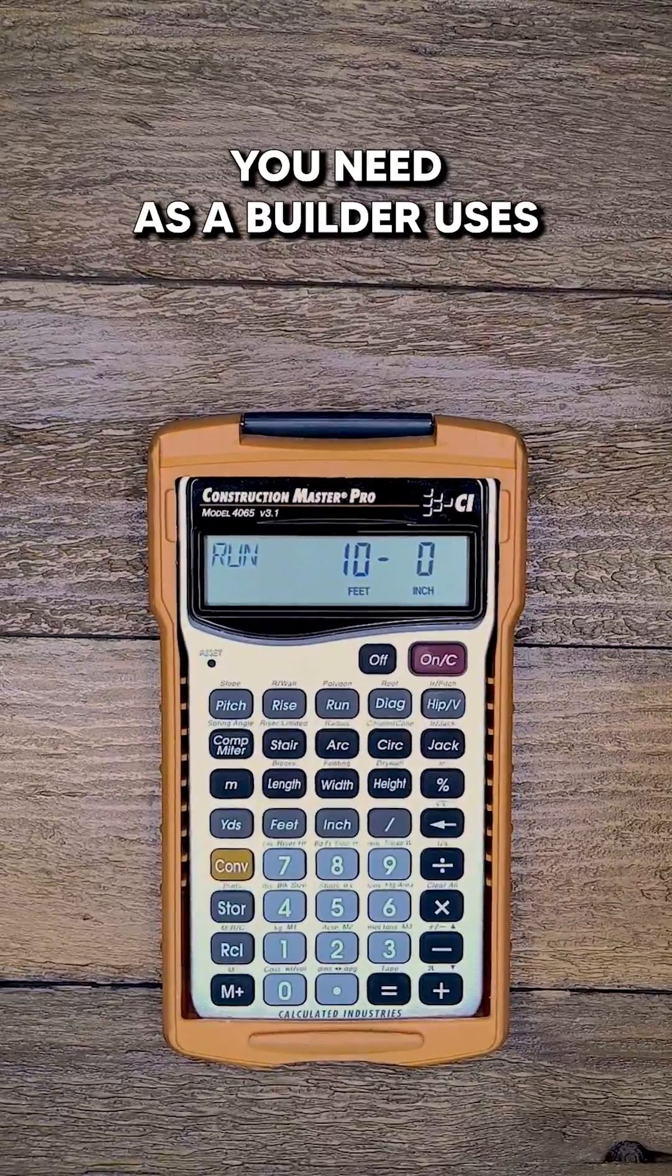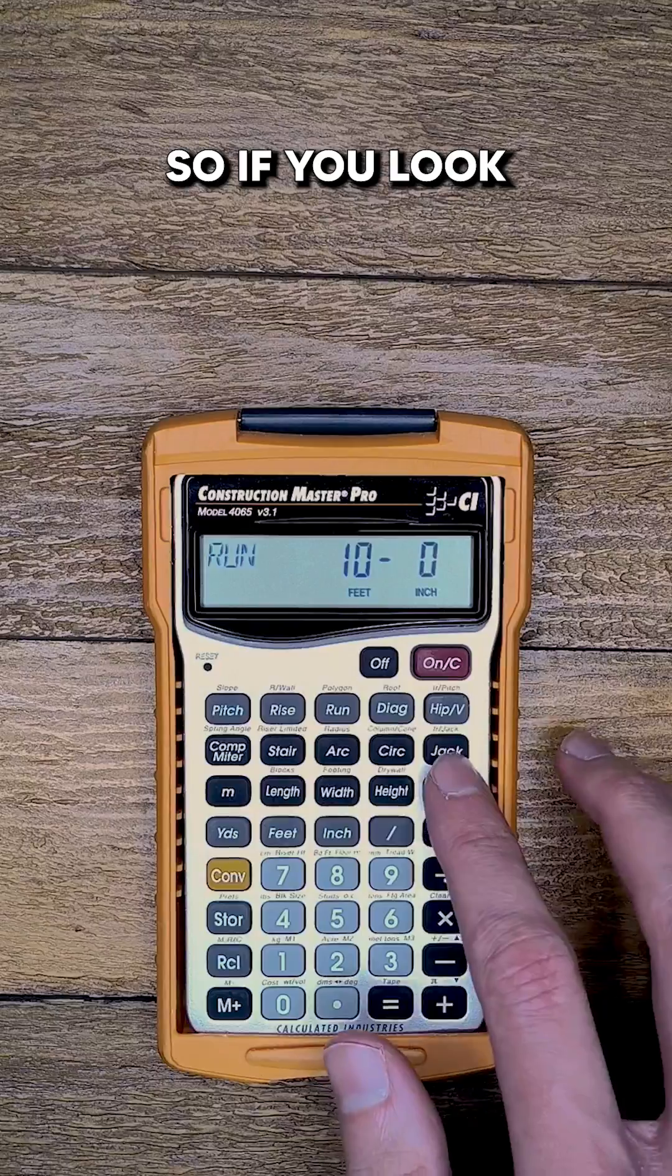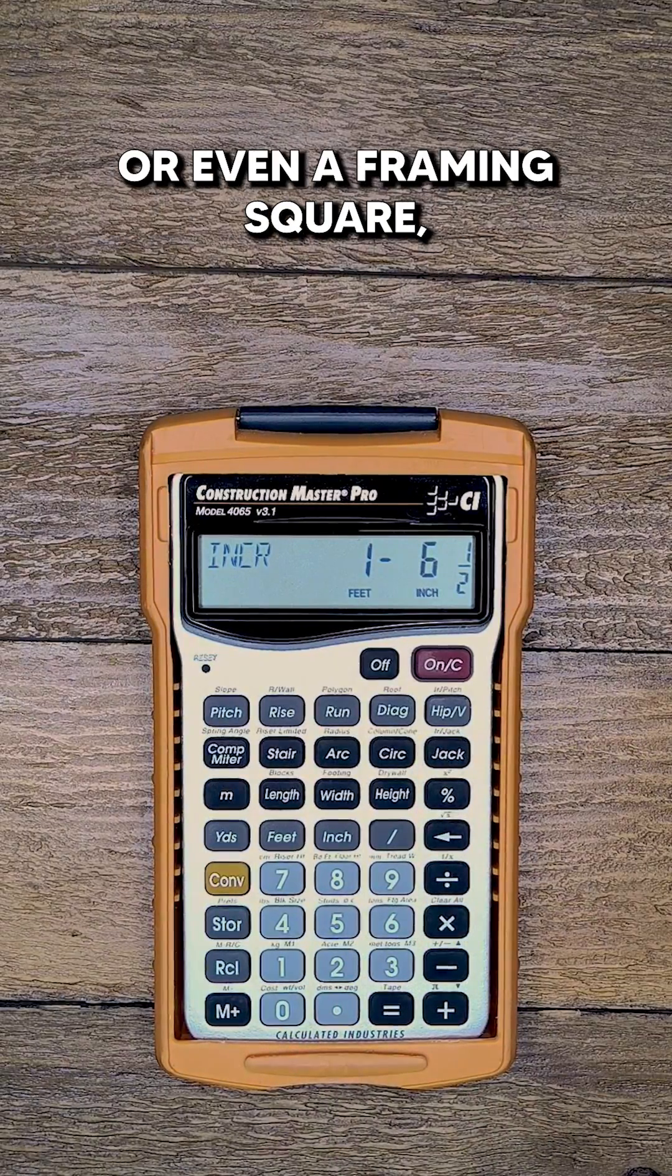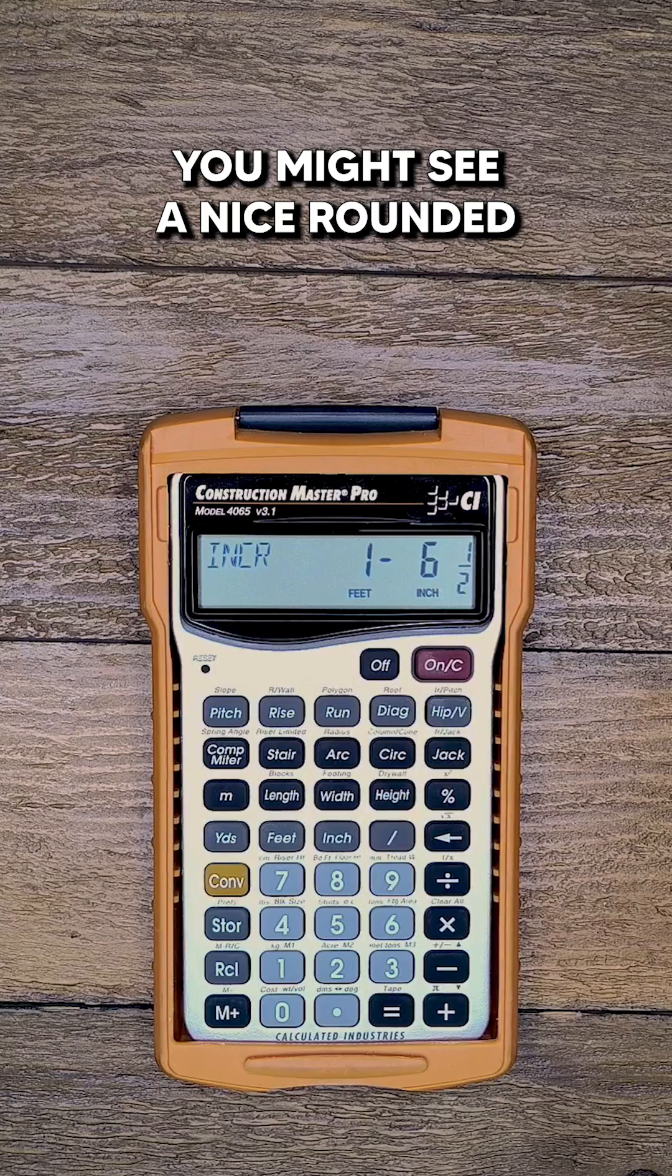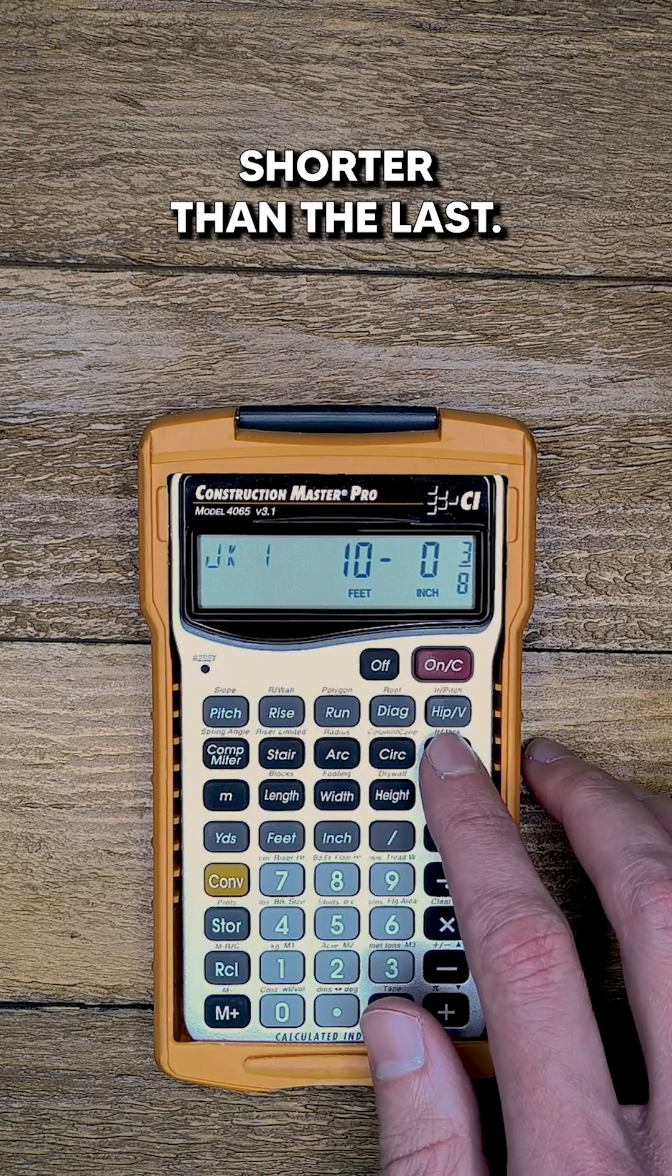A lot of the math you need as a builder uses repeated additions or subtractions to figure out the next length. So if you look at the incremental difference of your jacks on the calculator, or even a framing square, you might see a nice rounded fraction like this and think that every jack should be one foot six and a half inches shorter than the last.